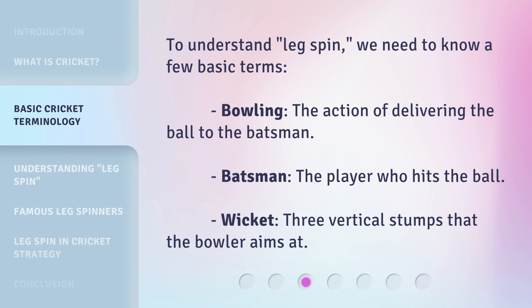To understand legspin, we need to know a few basic terms. Bowling: the action of delivering the ball to the batsman. Batsman: the player who hits the ball. Wicket: three vertical stumps that the bowler aims at.